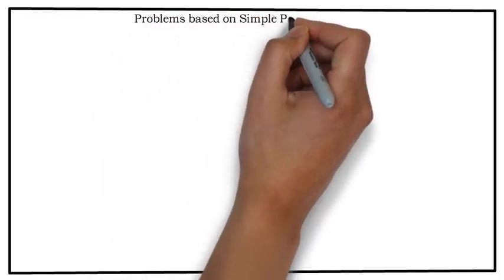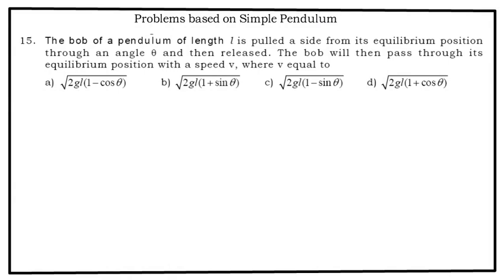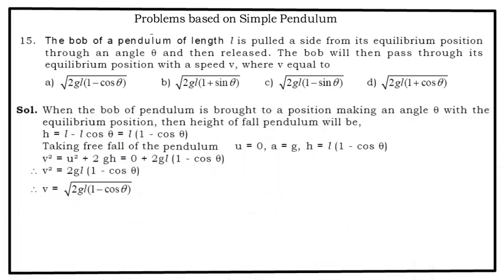Problems based on simple pendulum, problem number 15. The bob of a pendulum of length L is pulled aside from its equilibrium position through an angle θ and then released. The bob will then pass through its equilibrium position with a speed of - four options A, B, C, D are given in front of you. Let's see the solution. When the bob of pendulum is brought to a position making an angle θ with the equilibrium position, then the height through which the pendulum falls will be H = L - L cos θ = L(1 - cos θ).